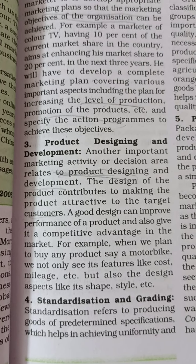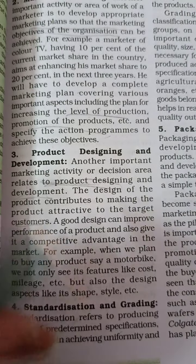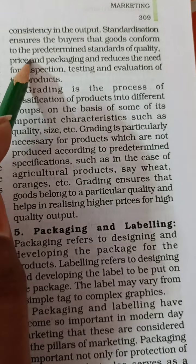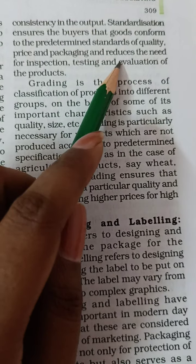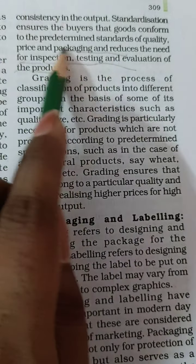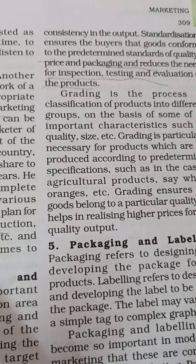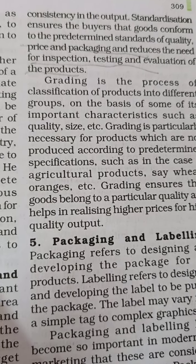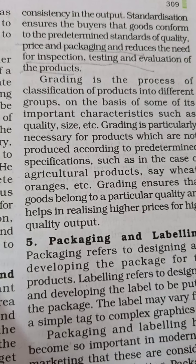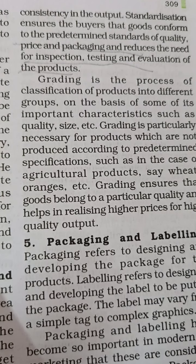Next is standardization and grading. Standardization refers to producing goods of pre-determined specifications which help in achieving uniformity and consistency in the output. Standardization ensures the buyer that goods conform to pre-determined standards of quality, price, and packaging, and reduces the need for inspection, testing, and evaluation of the product. All products being made are of the same standard. For example, if you take a shirt from Monte Carlo, size 30 should be of a consistent measurement and size 34 should be of another consistent measurement — a standard is set so that people who know their size can shop without checking every time. That is the meaning of standardization.